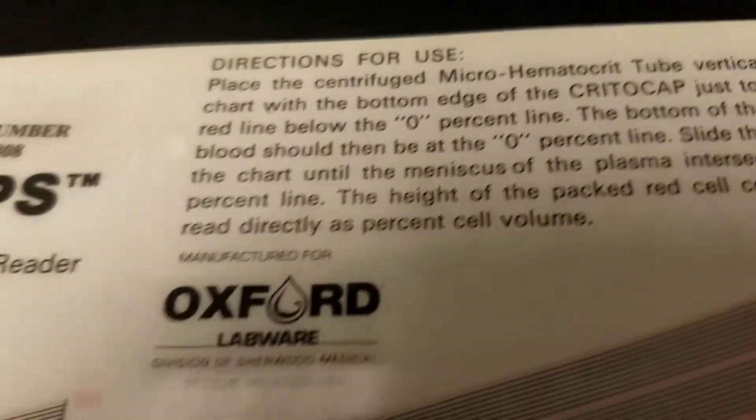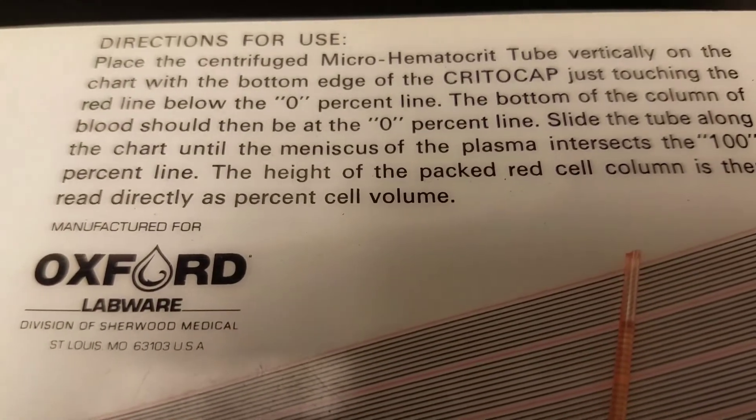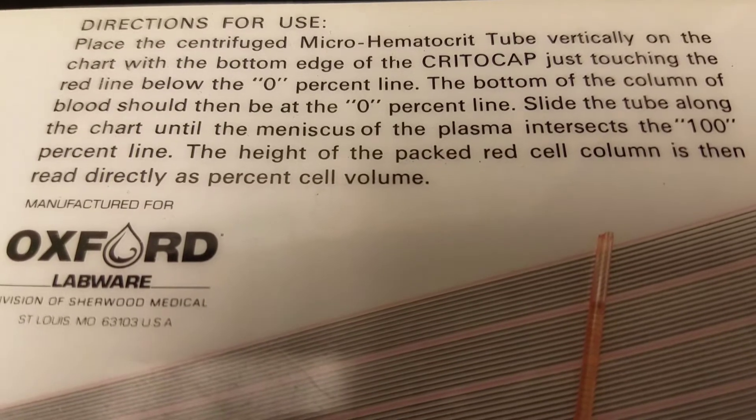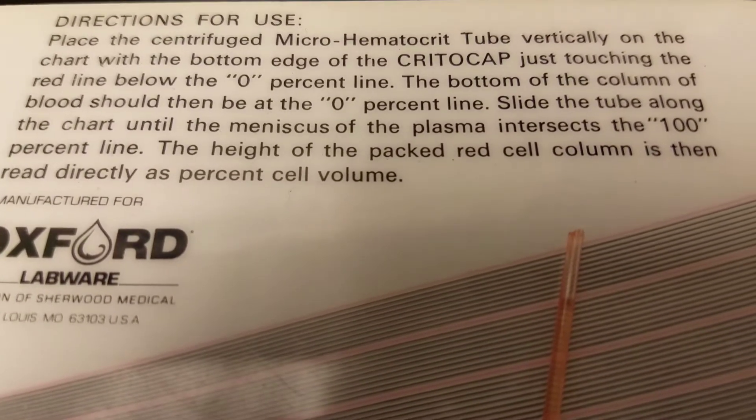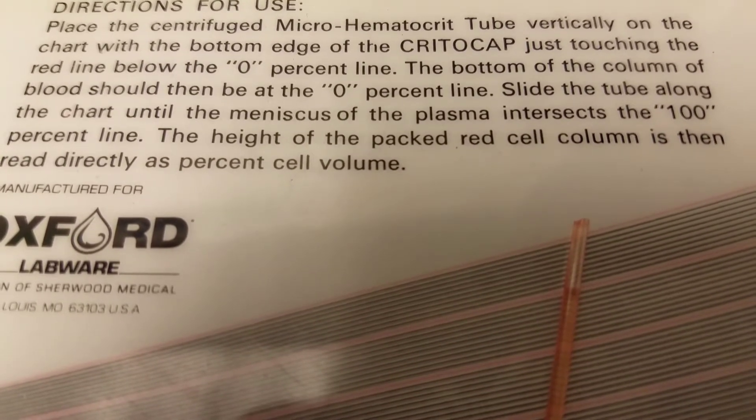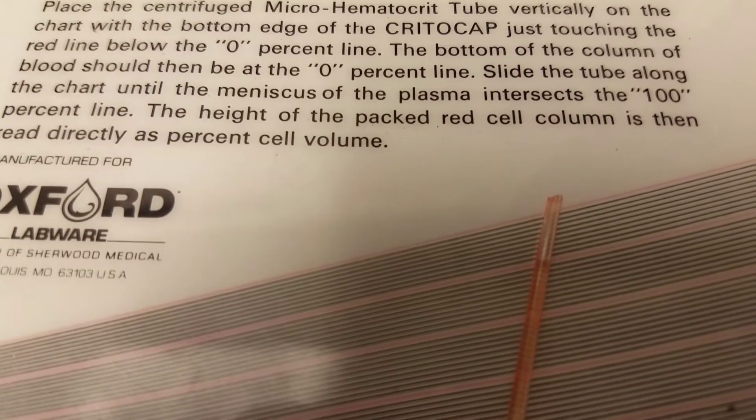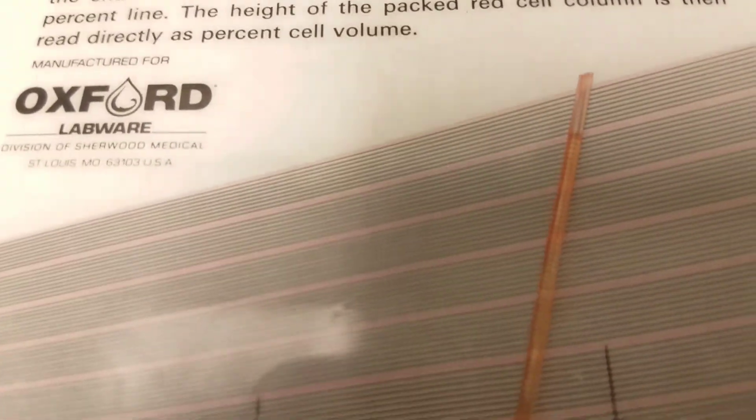Now here in our paper, what we have to do. It says here: place the centrifuge microhematocrit tube vertically on the chart with the bottom edge of the cryocap just touching the red line below the 0% line. The bottom of the column of the blood should be at the 0% line. Slide the tube along the chart until the meniscus of the plasma intersects 100% line. The height of the packed red cell column is then read directly as percent cell volume. We need the edge of the cryocap and that would be that little white part.